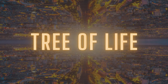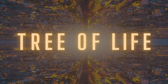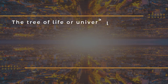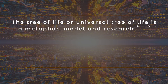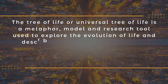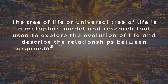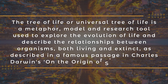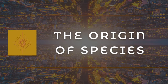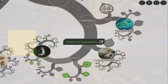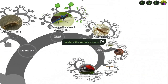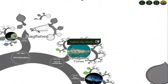First, let's take a deeper look at the tree of life. In biochemistry and biology, the tree of life or universal tree of life is a metaphor, model and research tool used to explore the evolution of life and describe the relationships between organisms, both living and extinct, as described in a famous passage in Charles Darwin's On the Origin of Species, 1859. The tree of life shows how all life on Earth is related. Each leaf represents a different species, and the branches show how these many species evolved from common ancestors over billions of years.